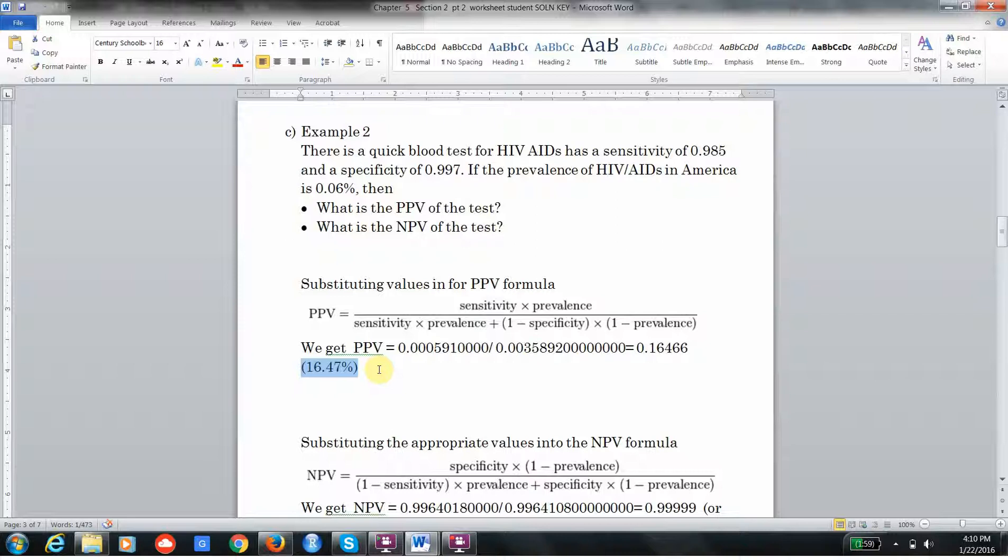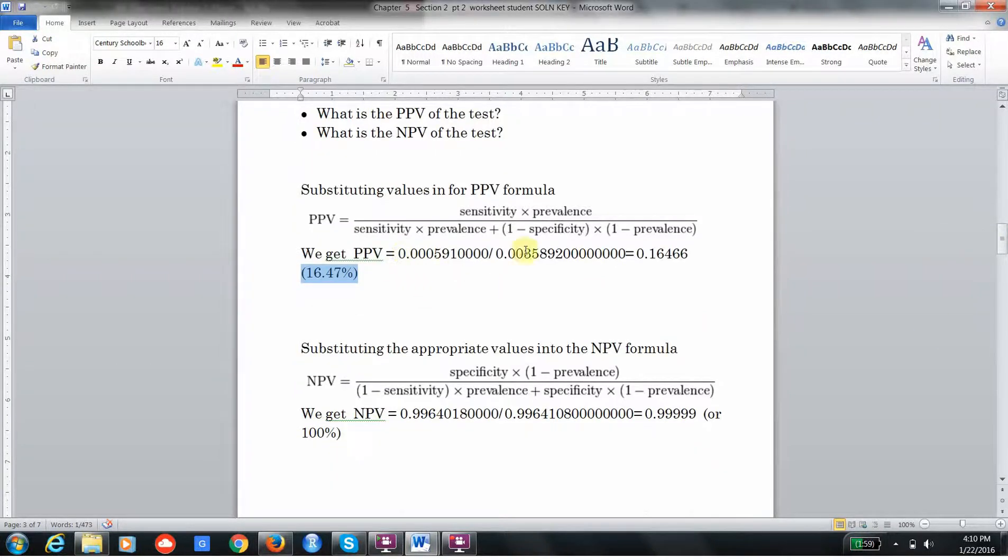It's the same as playing Russian Roulette. The chances that you actually have it if you had a positive test result are still very low—roughly one in six. It's all because of the prevalence being so small, not because of the test. Here I've written out the numerator and denominator to five decimal places and then rounded it to four and wrote it as a percentage.